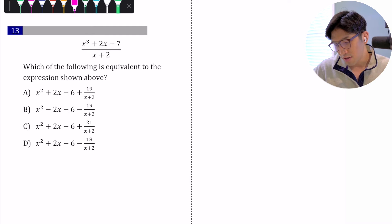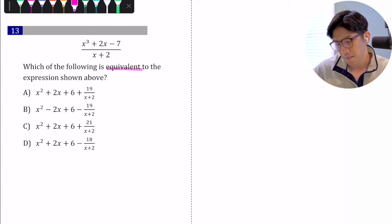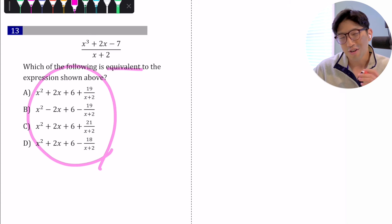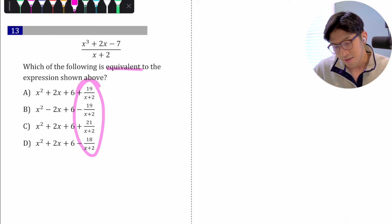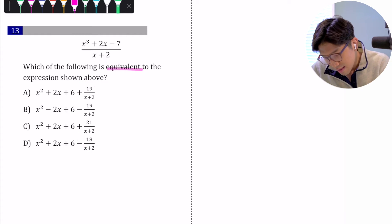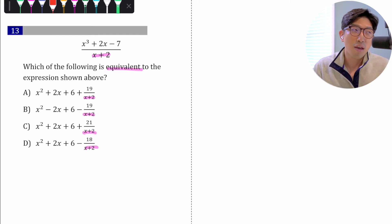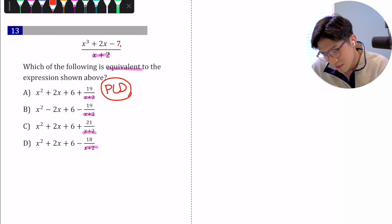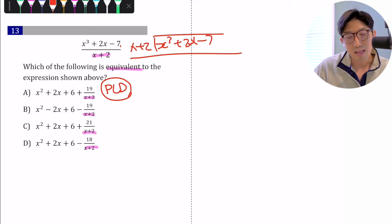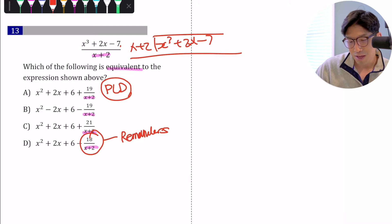Number two — the question gives us an expression and asks which of the following is equivalent to it. When you look at the answer choices, you can get a lot of information from them. Every single answer choice has a fraction at the end, and they all share the same denominator as the original expression — which is a common structure used in polynomial long division. You know, x cubed plus 2x minus 7 divided by x plus 2 — that's polynomial long division. And these fractions at the end typically represent the remainders.